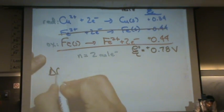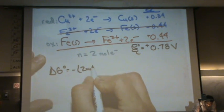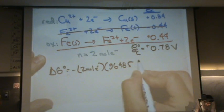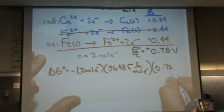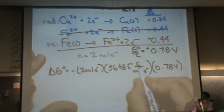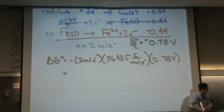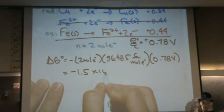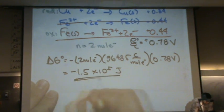And so delta G standard equals minus n, two moles of electrons, times F, 96,485 coulombs per mole, times E standard 0.78 volts. That gives us negative 1.5 times 10 to the 5 joules.